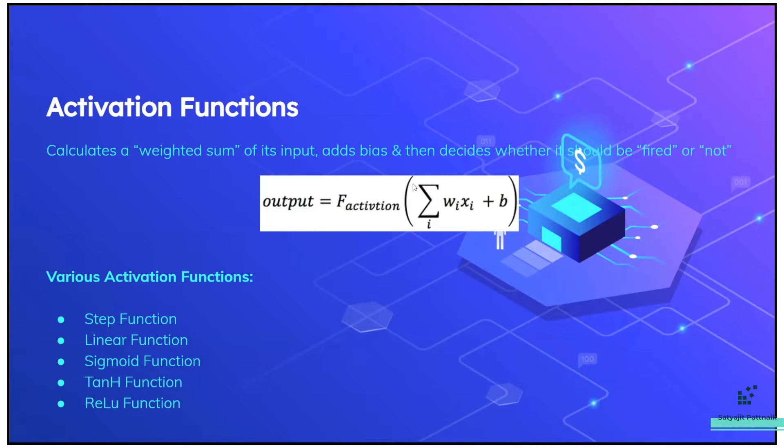As I already told you, activation functions calculates a weighted sum of its input, adds bias, and then decides whether it should be fired or not.